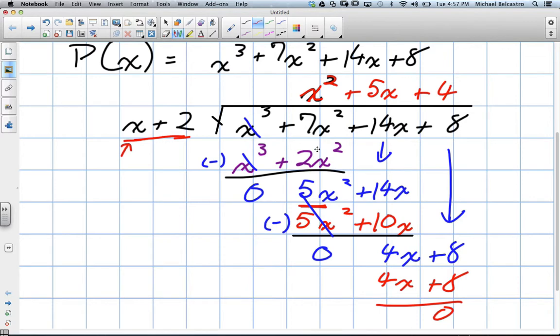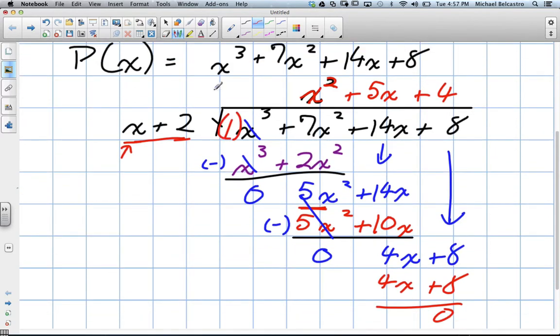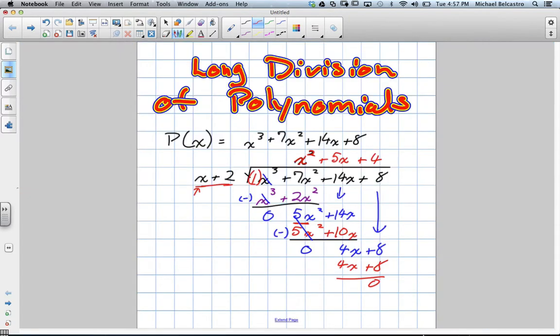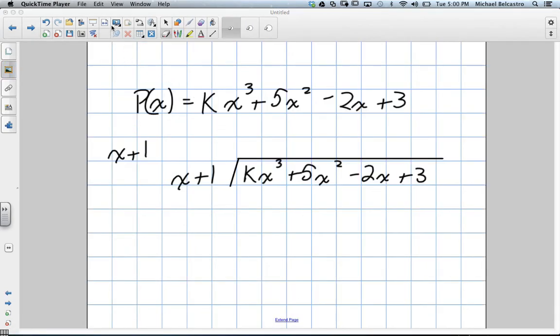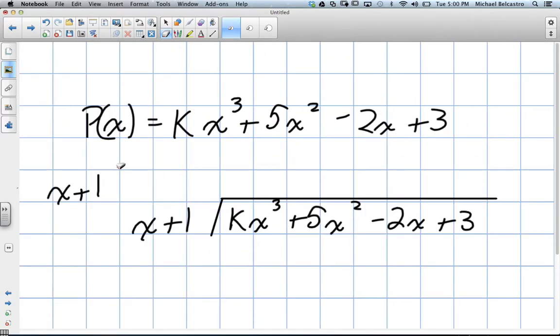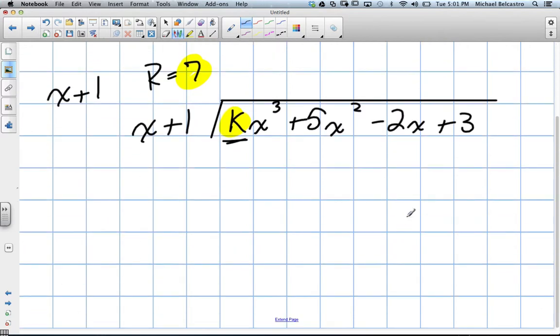Let's say we had an unknown value in here, like we were trying to solve for this. This is where we're going to pause and work backwards to it. Let's say we were to work backwards through this. They've given us a question like this, and they've told us that the remainder in this question is a value of 7.